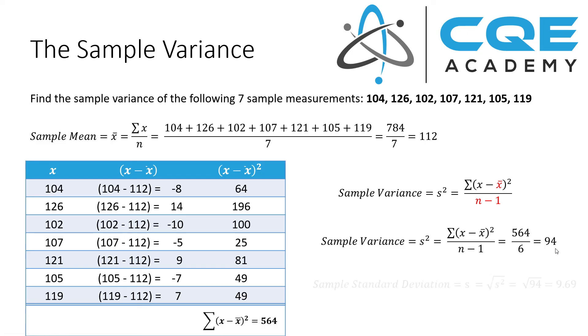Then we can convert this into the sample standard deviation. To convert from variance to standard deviation, all we have to do is take the square root of the sample variance. So s equals the square root of s squared, which equals the square root of 94, which equals 9.69. So the sample standard deviation of this data is 9.69.